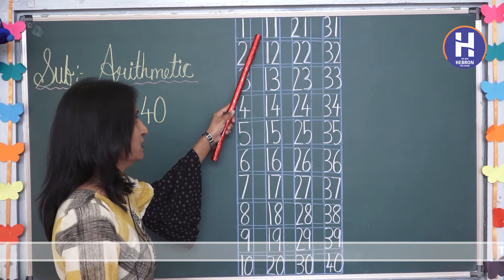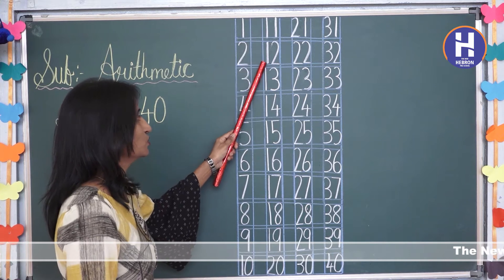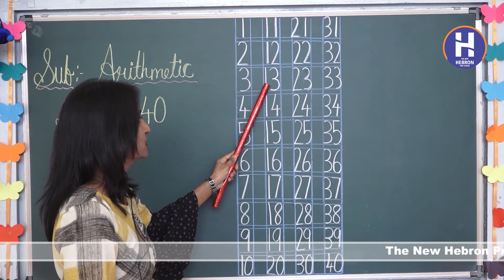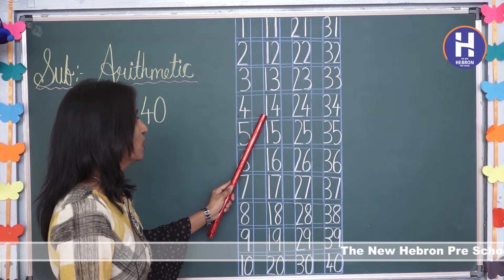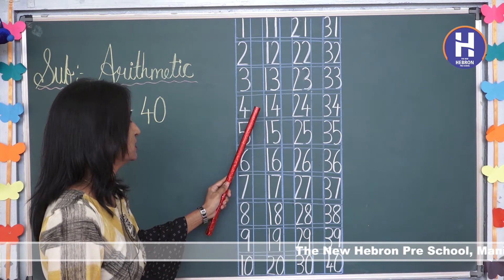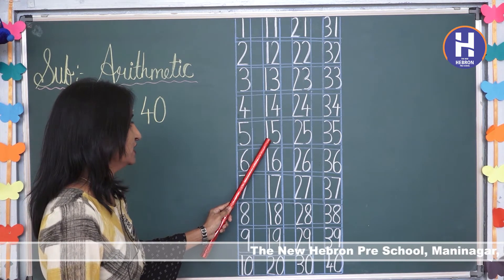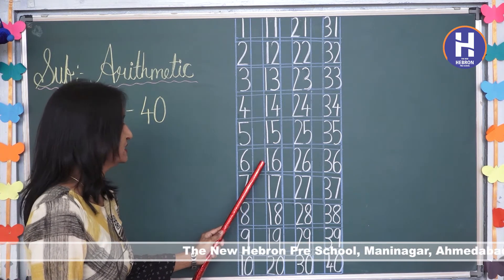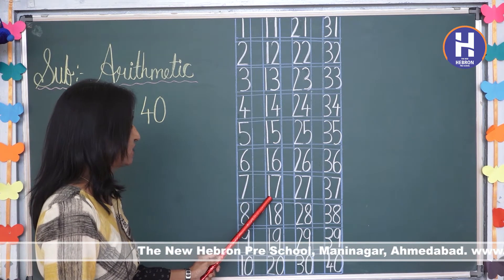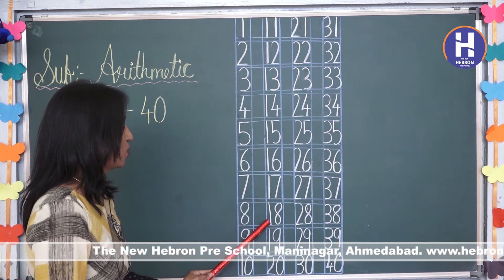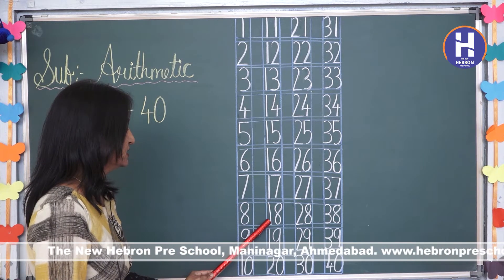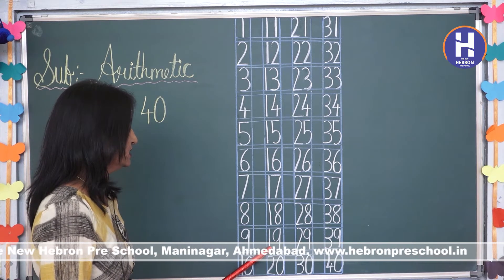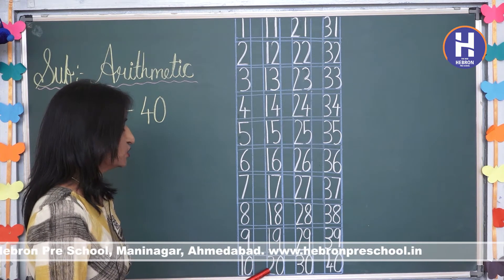1, 1 — 11. 1, 2 — 12. 1, 3 — 13. 1, 4 — 14. 1, 5 — 15. 1, 6 — 16. 1, 7 — 17. 1, 8 — 18. 1, 9 — 19. 2, 0 — 20.